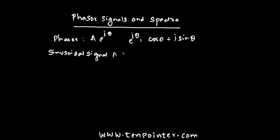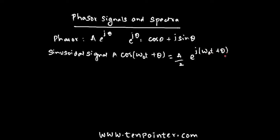A sinusoidal signal A·cos(ω₀t + θ) — where A is the amplitude, ω₀ is the angular frequency, and θ is the angle — can be mathematically represented as (A/2)·e^(j(ω₀t + θ)) plus (A/2)·e^(-j(ω₀t + θ)).